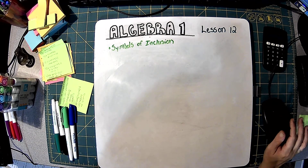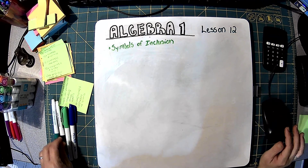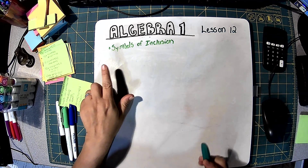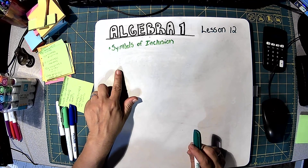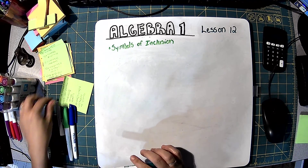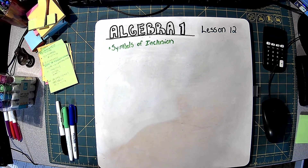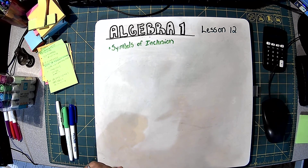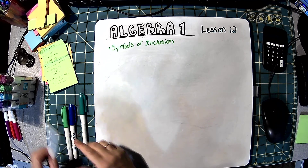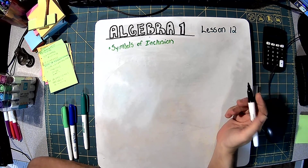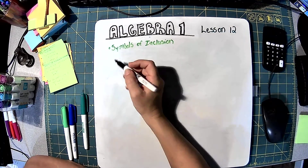Hi guys, so this is Algebra 1, Lesson 12, and this lesson is about symbols of inclusion. Symbols of inclusion are things like parentheses, where you're going to do the stuff inside the parentheses first. The easiest way to explain this is just to do some examples.